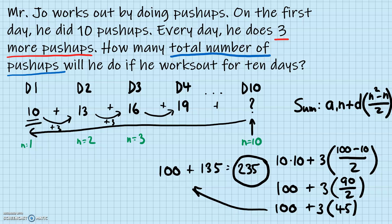This problem is solved using the arithmetic series formula. Mr. Joe will do a total of 235 push-ups — not 235 on the 10th day, but 235 total across all 10 days combined. The advice is to write out the first few terms, identify whether it's a sequence or series problem, and use the appropriate formula.